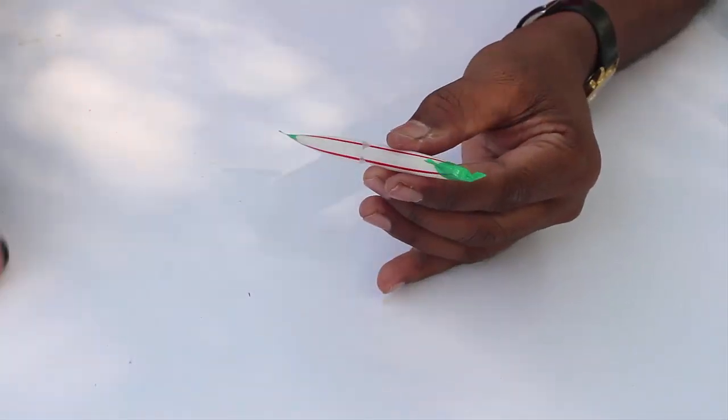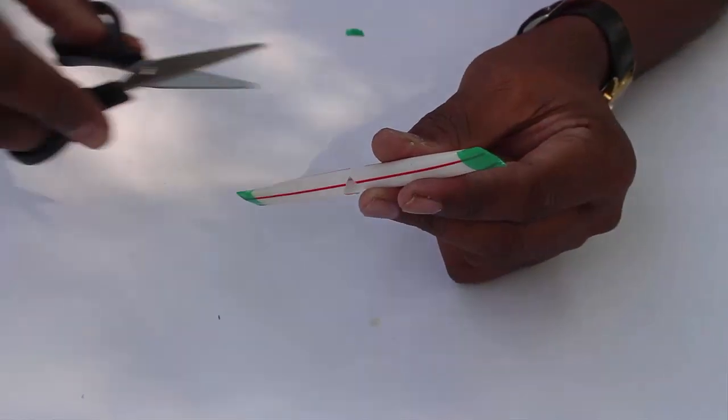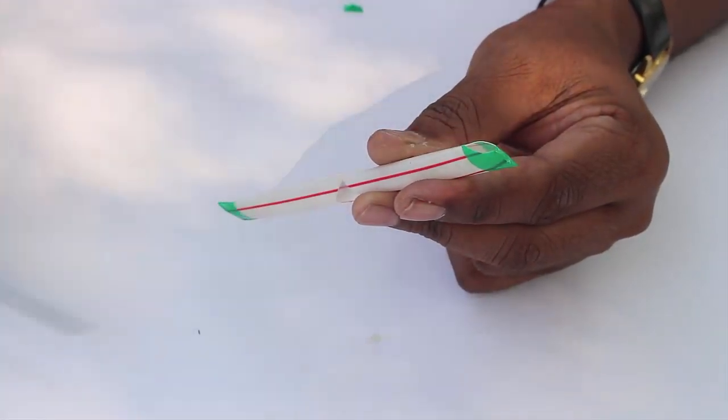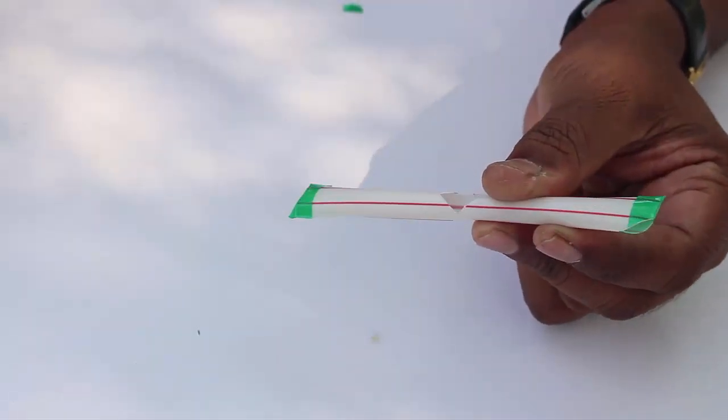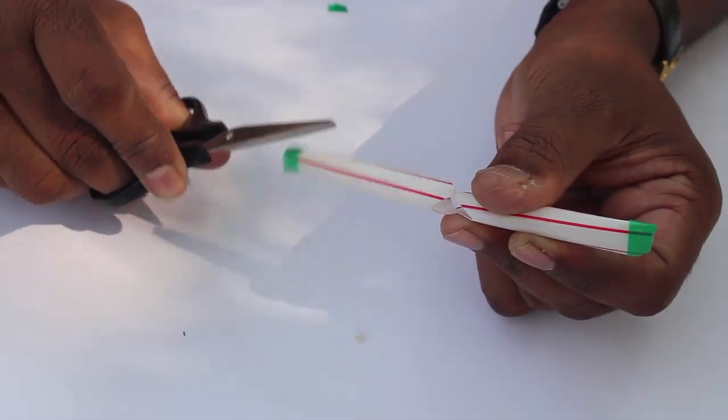Then nip one corner on one side and the diametrically opposite corner on the other side. This way you will make two holes which will be diametrically apart. Air will escape from these holes and spin the straw.